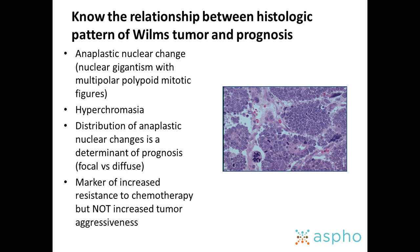The relationship between histologic pattern and prognosis: anaplasia involves anaplastic nuclear changes with hyperchromasia and increased mitotic rate. The distribution — focal versus diffuse throughout tumor samples — determines prognosis, with diffuse anaplasia having a much worse outcome. Anaplasia is a marker of resistance to chemotherapy, indicating the need for more aggressive therapy for those children regardless of tumor stage.